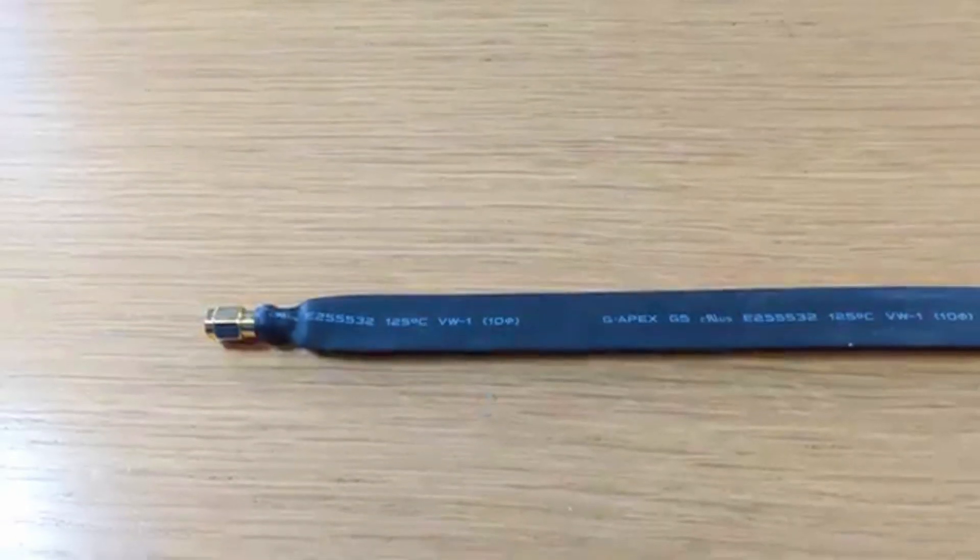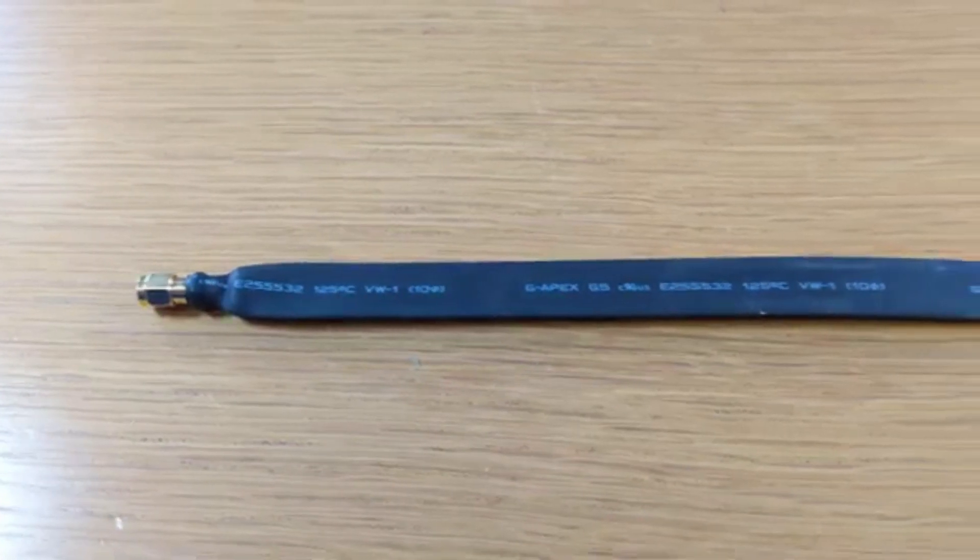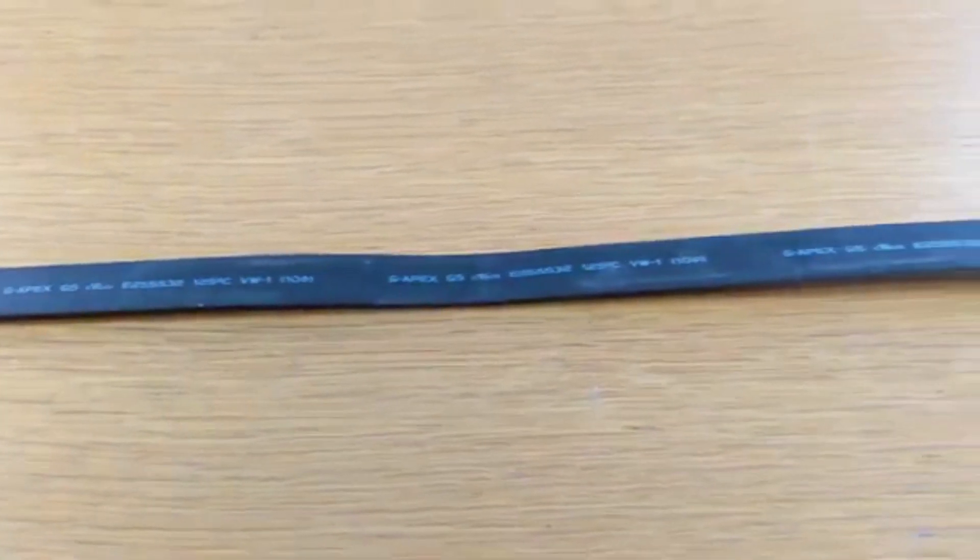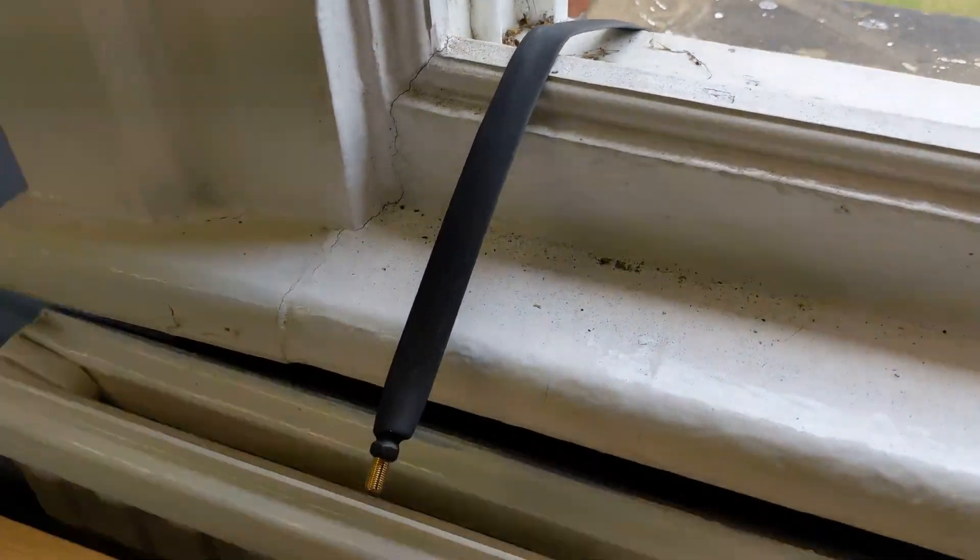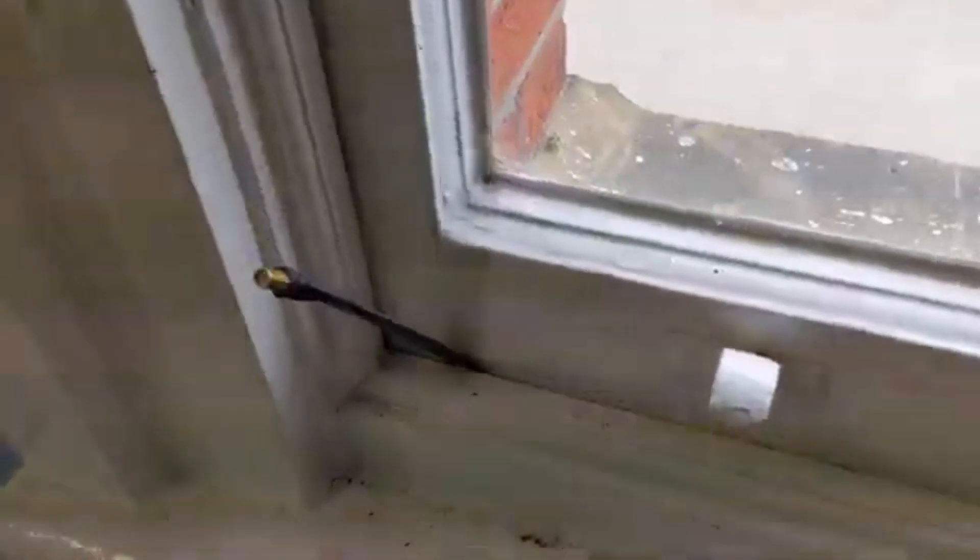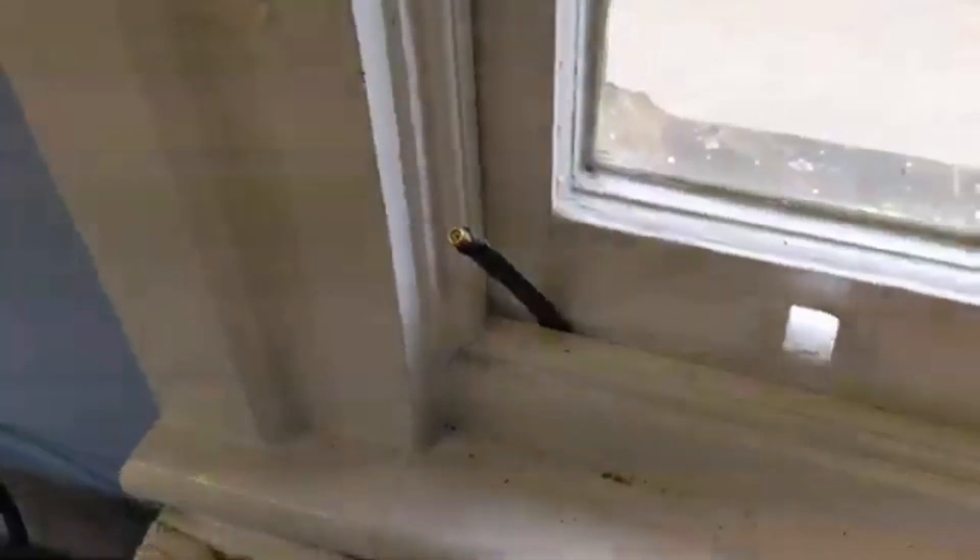As I just alluded to, this kit comes with a window pass-through cable. This cable is a flat cable that just allows you to close windows on cables and still get the antenna outside. This means there is some loss to this, but it's just a great way of doing it without having to drill any holes.